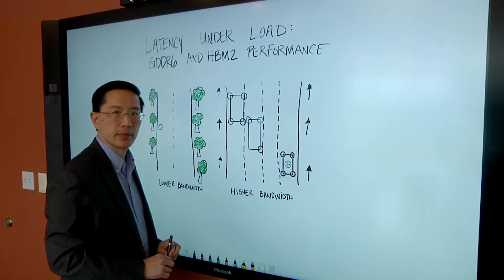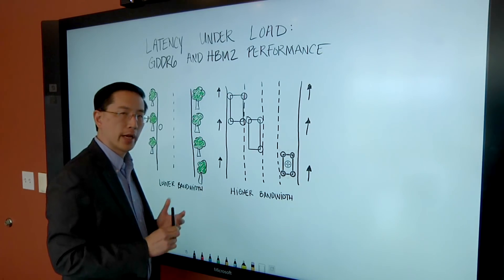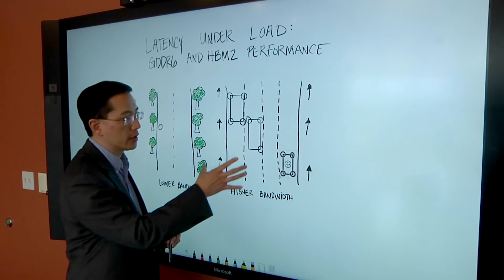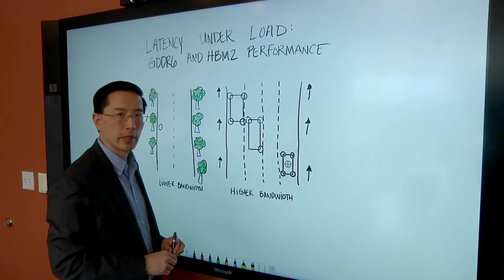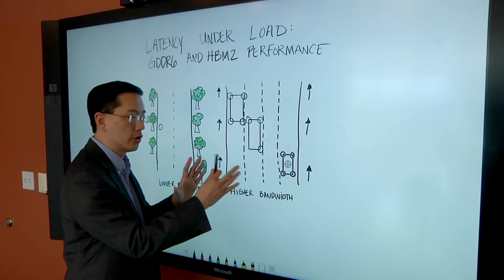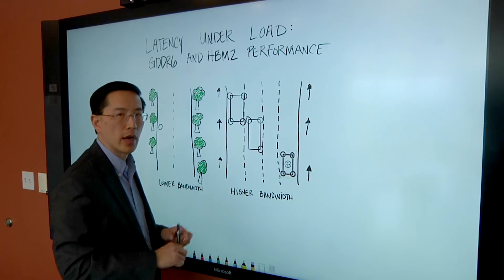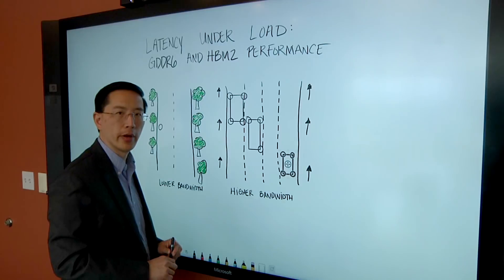Can you dedicate lanes as well? You can. And so some people actually do that in their systems. They may take some lanes and some resources in the memory system and say, these things are reserved for CPU traffic. And that would be analogous to like a carpool lane on a highway.